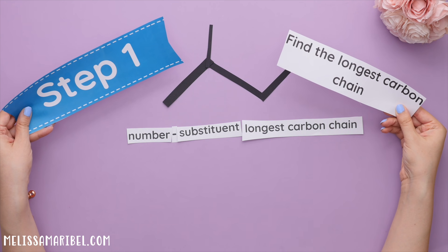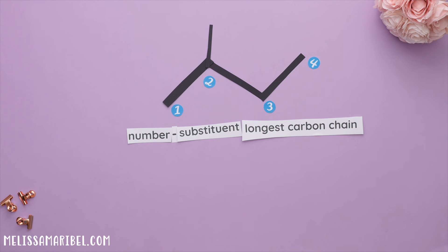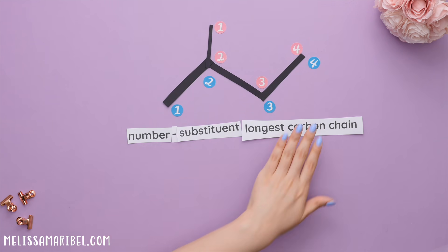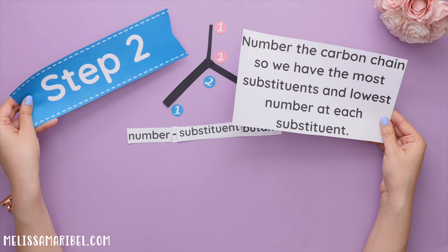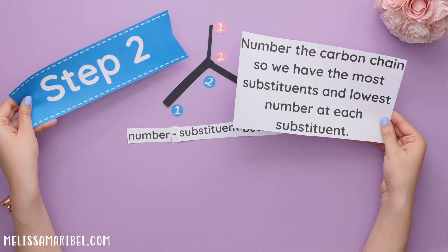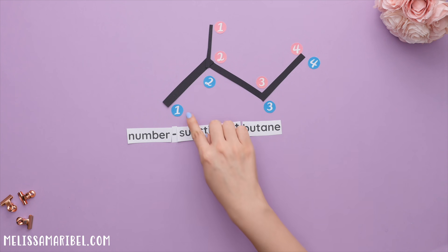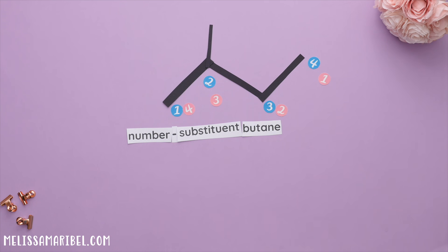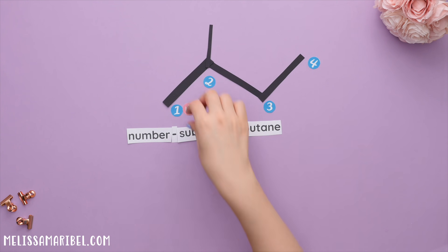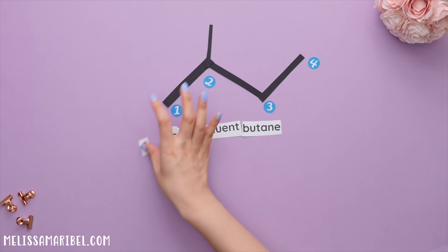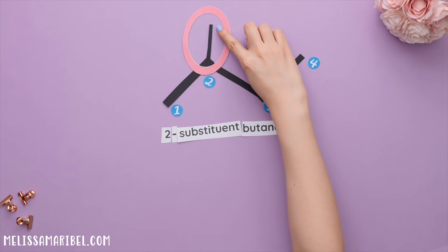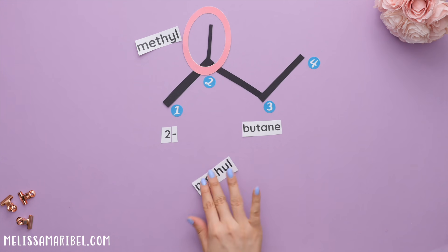Step one: find the longest carbon chain. Counting either way, the longest carbon chain is four carbons. The prefix for four is "but," and it ends in "-ane" for alkane, so butane. Step two: number the carbon chain for the lowest substituent number — numbered left to right, the substituent is at two; right to left it would be at three, so we keep left to right. Step three: identify the substituent. There's only one carbon not part of the main chain, so this is a methyl group, giving us 2-methylbutane.